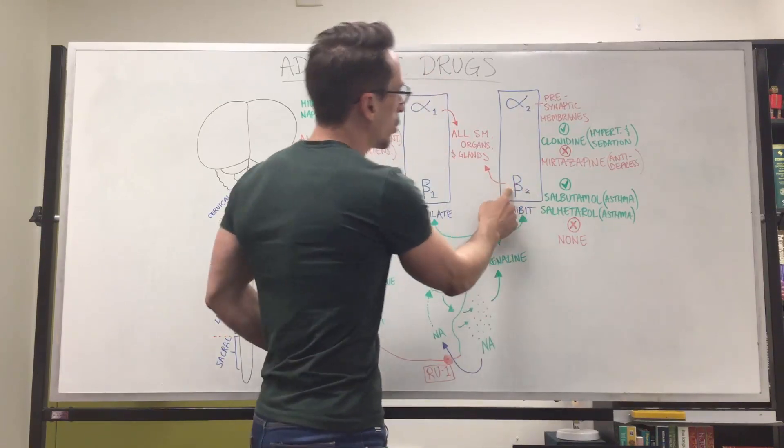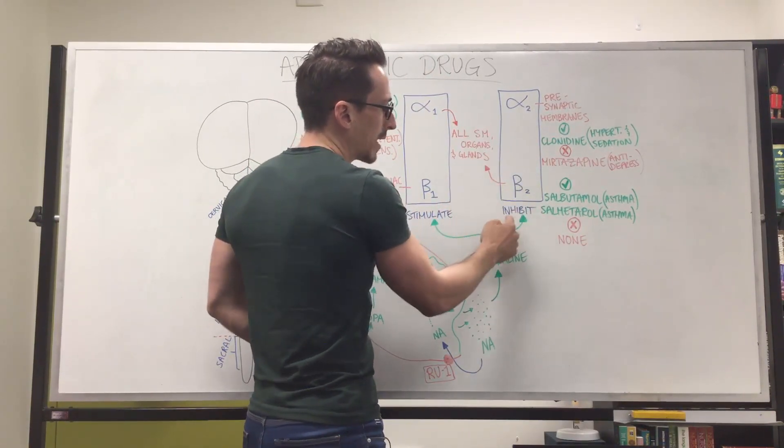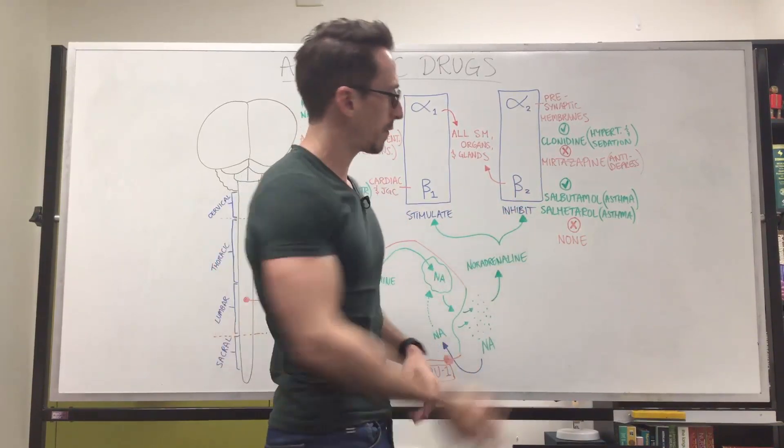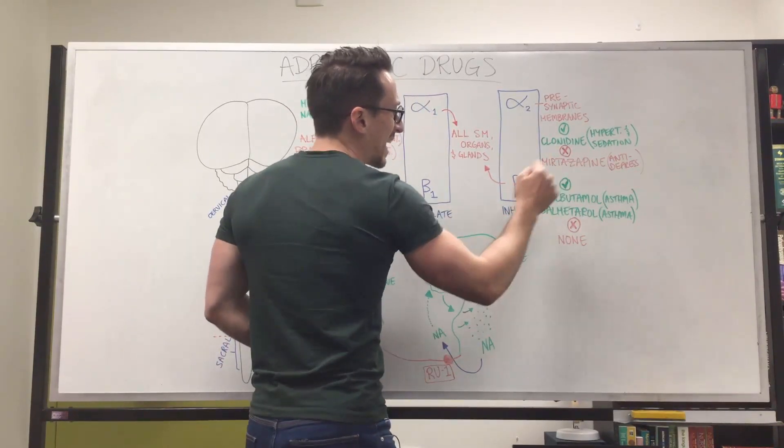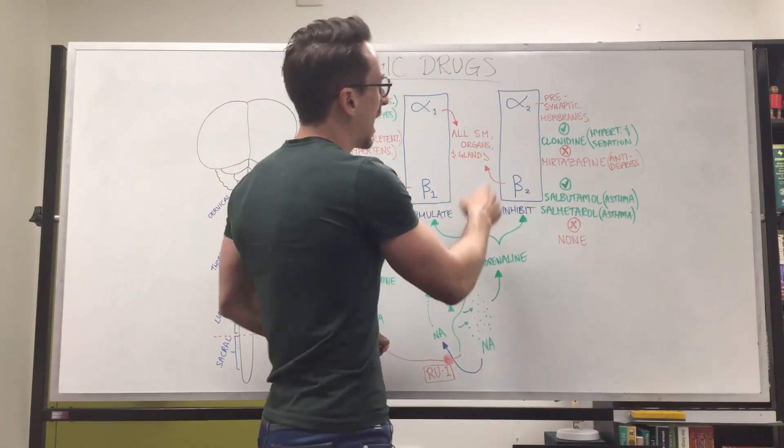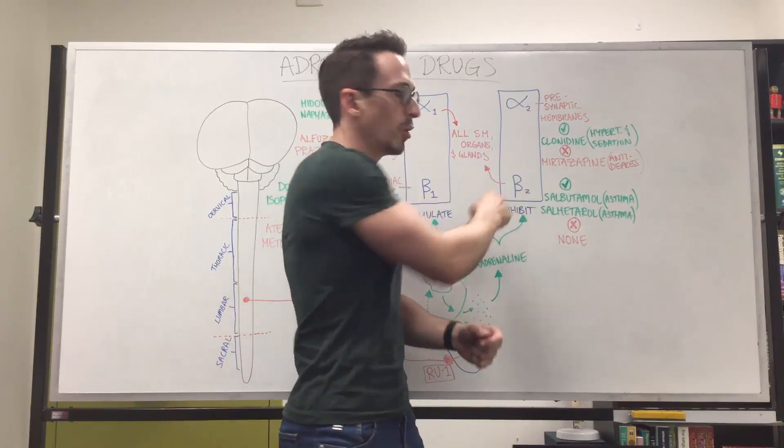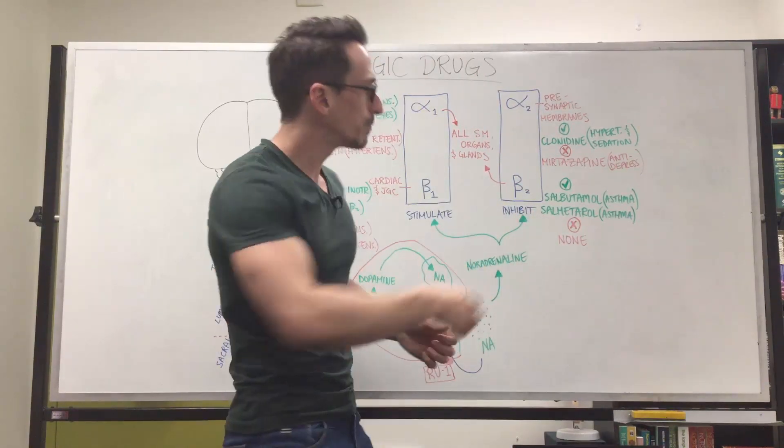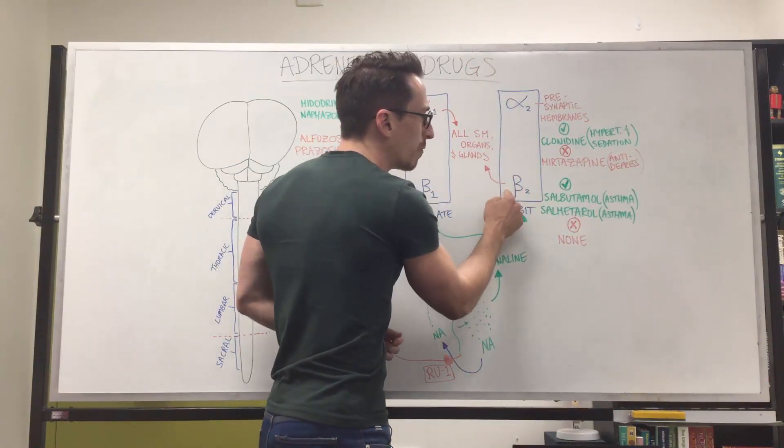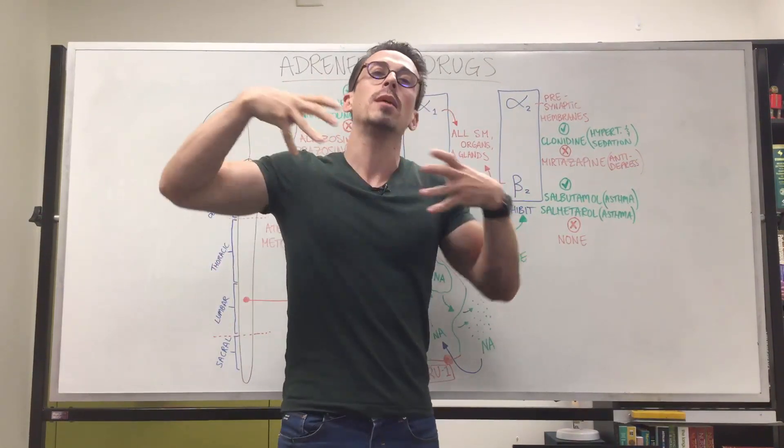If we look at beta-2, beta-2 is located in all smooth muscles, organs, and glands, but if you stimulate it, you actually inhibit it, funnily enough. So if noradrenaline's released, it inhibits all these smooth muscles. So it tells smooth muscles to open up. And specifically, these are found in the, what do we have two of? B2, two lungs. So if you have an agonist of B2, it inhibits the effects and opens up the airways.